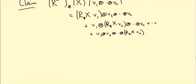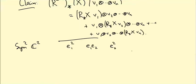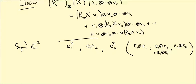The example is Sym2(C²). This has a basis: E1², E1E2, E2², which are shorthand for E1⊗E1, E1⊗E2 + E2⊗E1, and E2⊗E2 respectively. I'm just going to write them as polynomials because it's quicker.